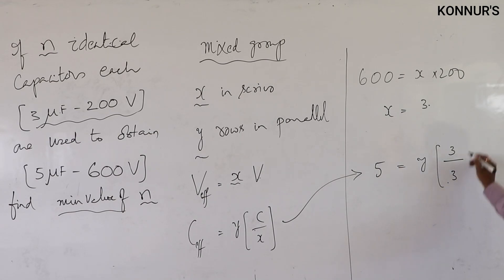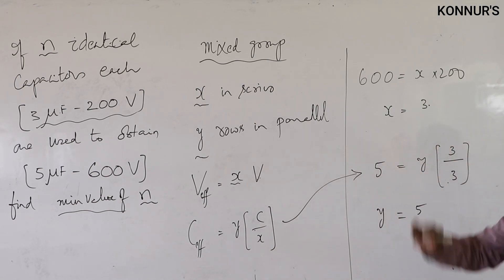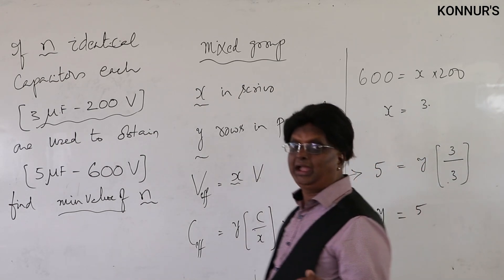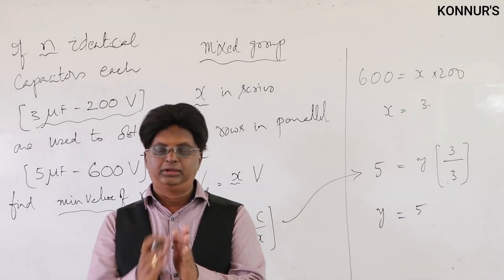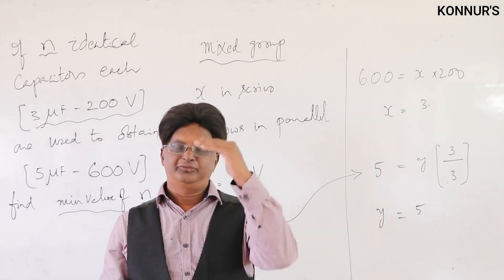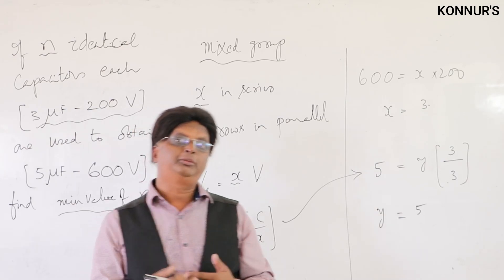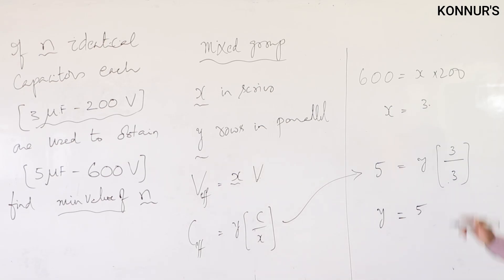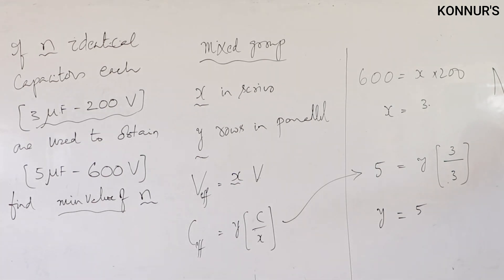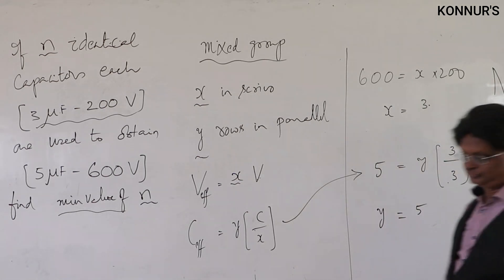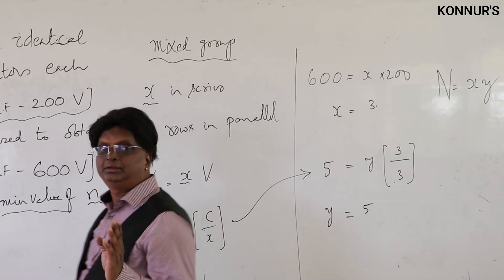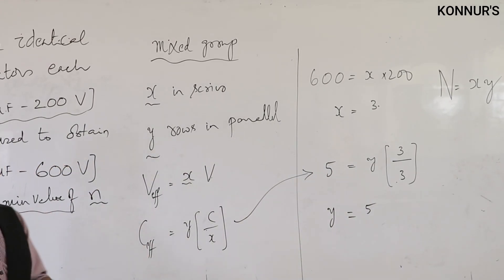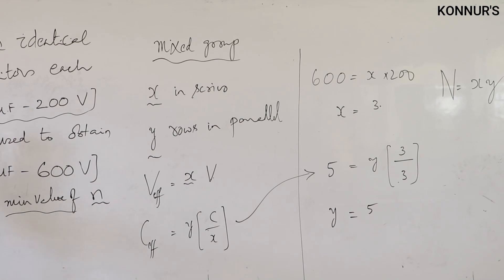So x = 3 and y = 5: three capacitors in series and five such rows in parallel. The minimum total number of capacitors is n = x × y = 15 capacitors for the required capacity and voltage rating.